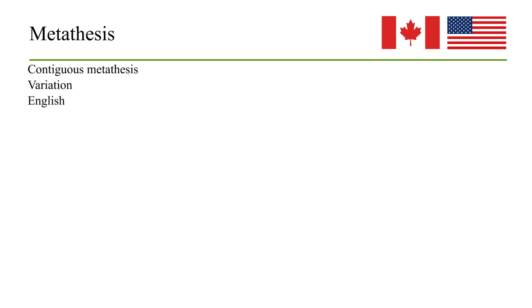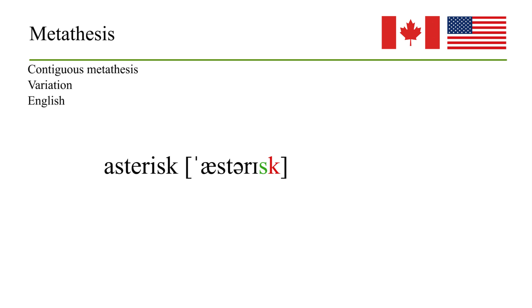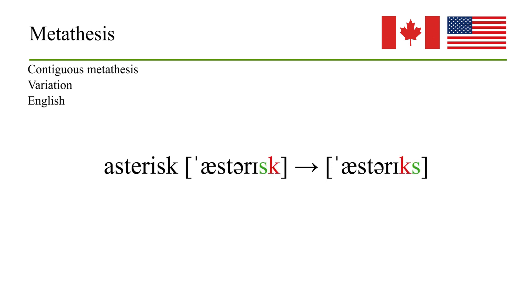Another example of synchronic variation in English resulting from metathesis is the word 'asterisk.' You can carefully pronounce it as 'asterisk,' but you would often hear it as 'asterix,' where the sounds 'sk' and 'ks' have switched places.